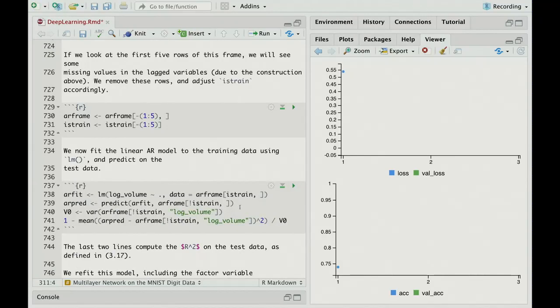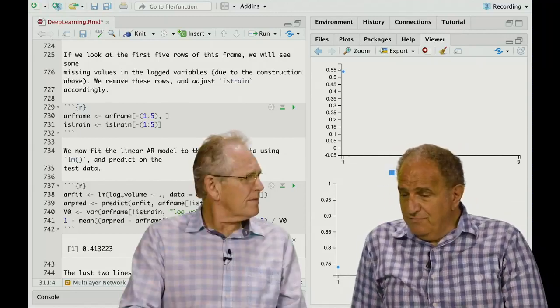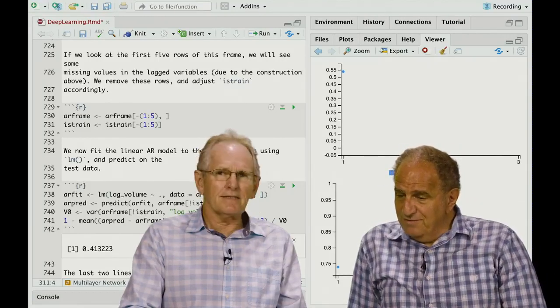And so now we fit a linear model, and we make predictions, and then we compute an R squared. And these are the lines for computing the R squared. We want the null variance, and then the prediction error, the mean squared error, and turn it into an R squared, and we get 41%. Is that good, Rob? Anything to do with the stock market that's 41% sounds pretty impressive. Exactly. Yeah. Now it would be nice if we could predict the stock price. Right. With 41% accuracy. Right. But it turns out log volumes, volume traded on a given day is, I think, easier to predict.